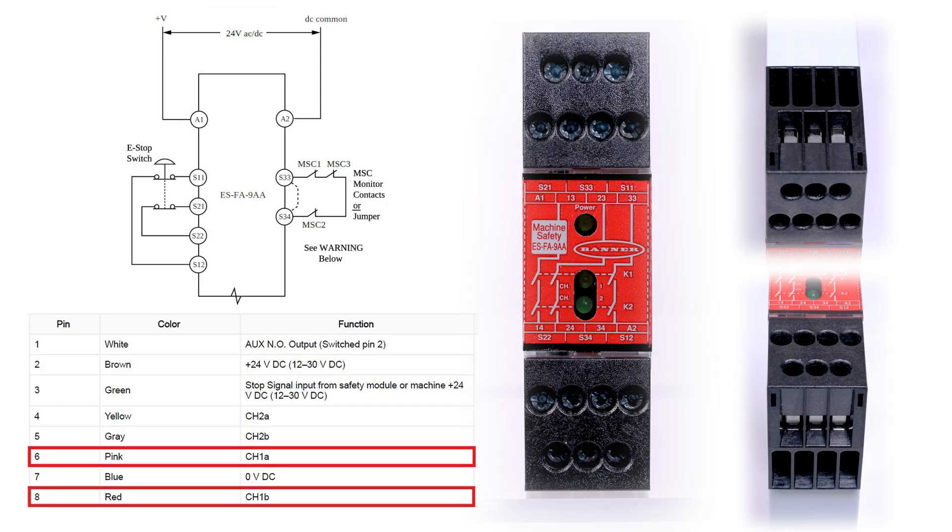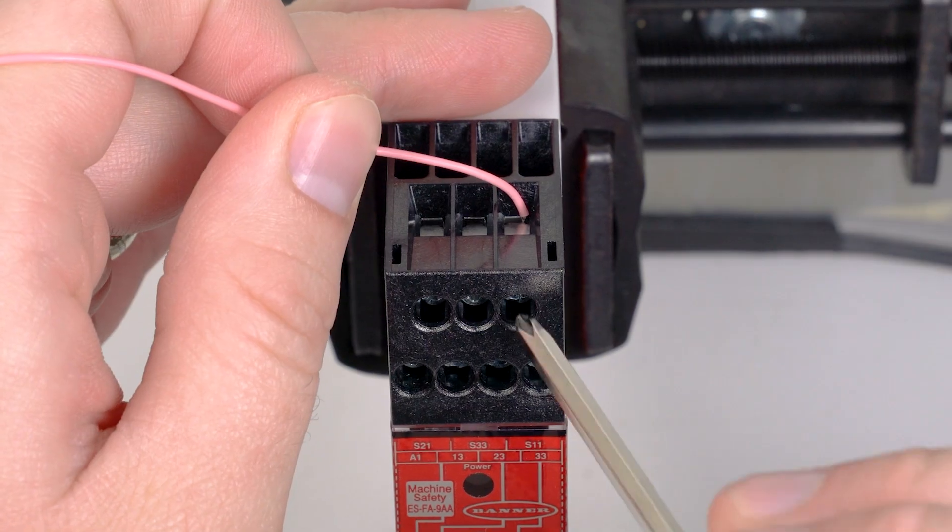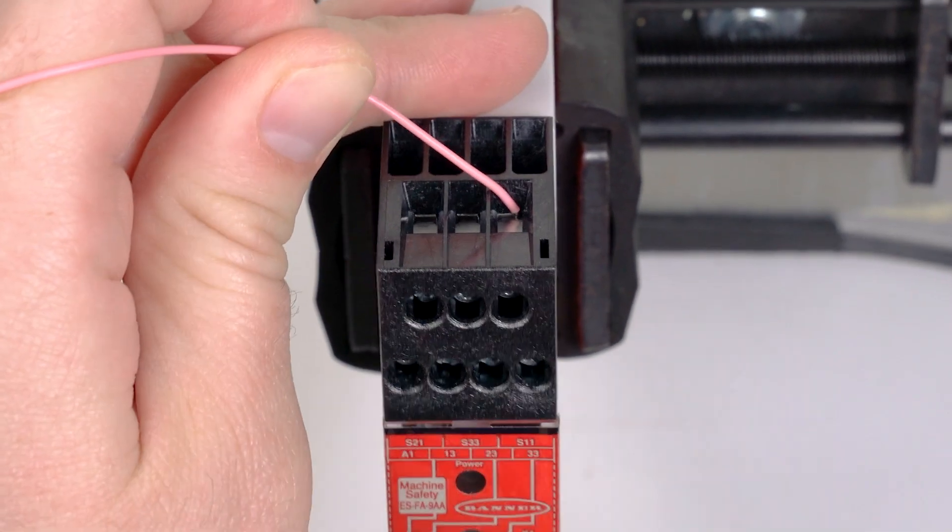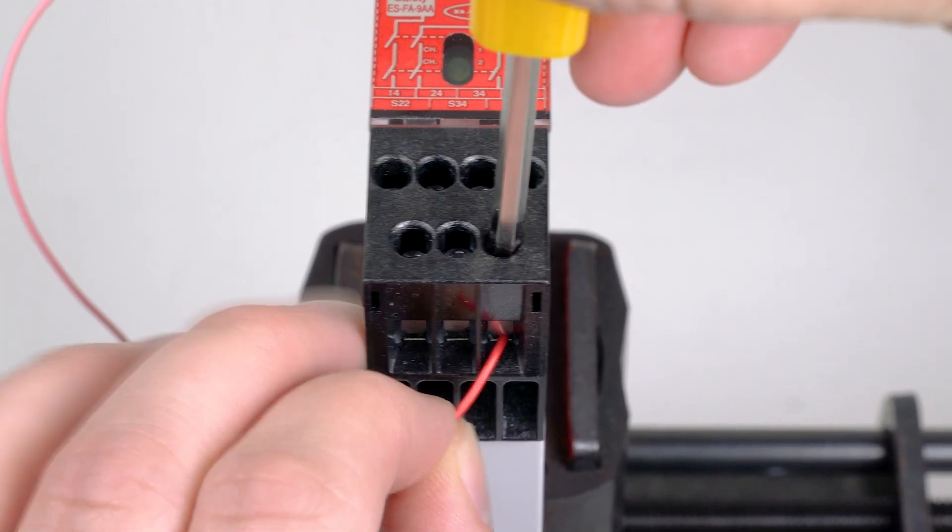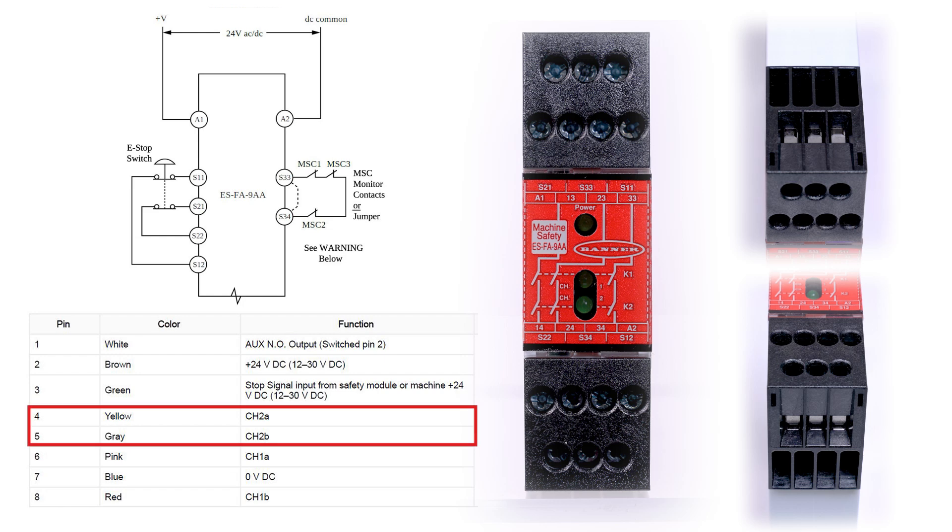Begin by connecting the channel 1 wires to terminals S11 and S12 on the module. Next, connect the channel 2 wires to terminals S21 and S22.